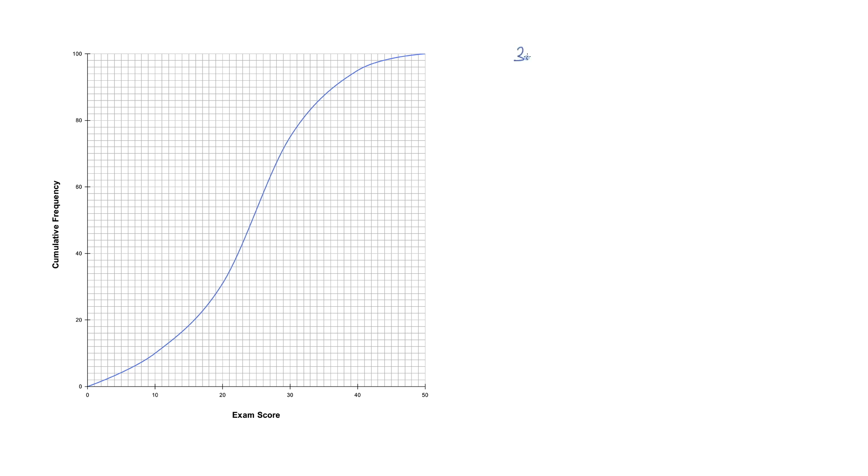So the third quartile, we take 100 divided by 4 and then multiply by 3. That's obviously 75. So what we do is we go across from 75 which is here. We draw a horizontal line across until we hit the curve. We then draw a vertical line down and we read off the score which is 30. Just drawing some arrows to indicate which way I've gone.